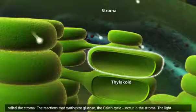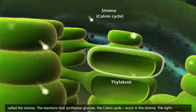The reactions that synthesize glucose, the Calvin cycle, occur in the stroma.